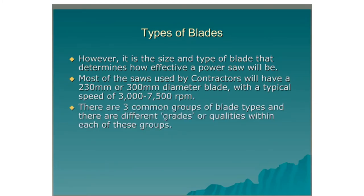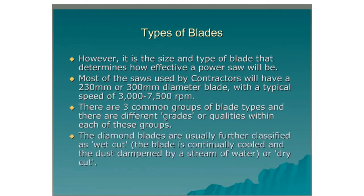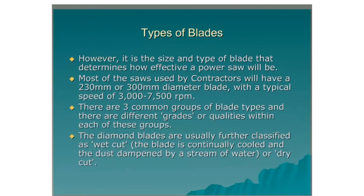There are three common groups of blade types, and there are different grades or qualities within each of these groups. The diamond blades are usually further classified as wet cut, where the blade is continually cooled and the dust dampened by a stream of water, or dry cut.